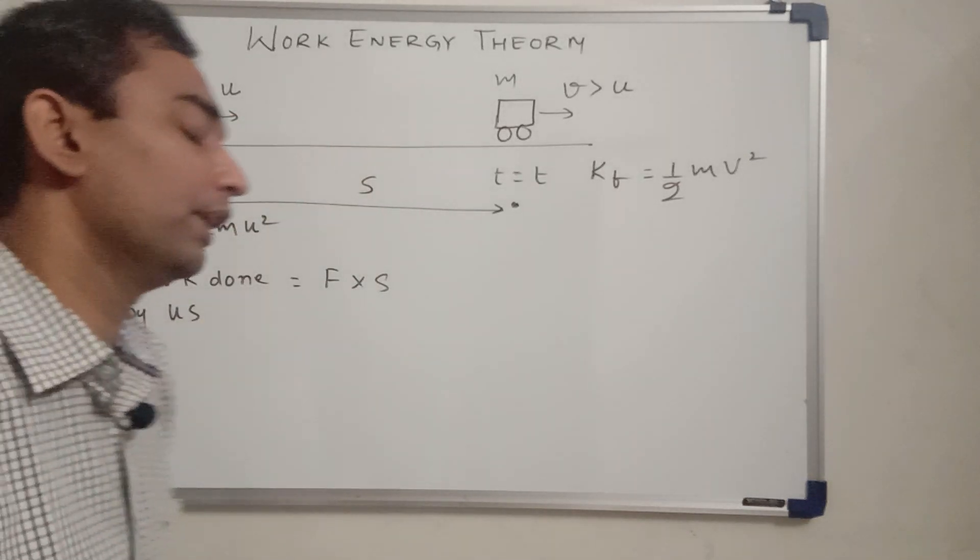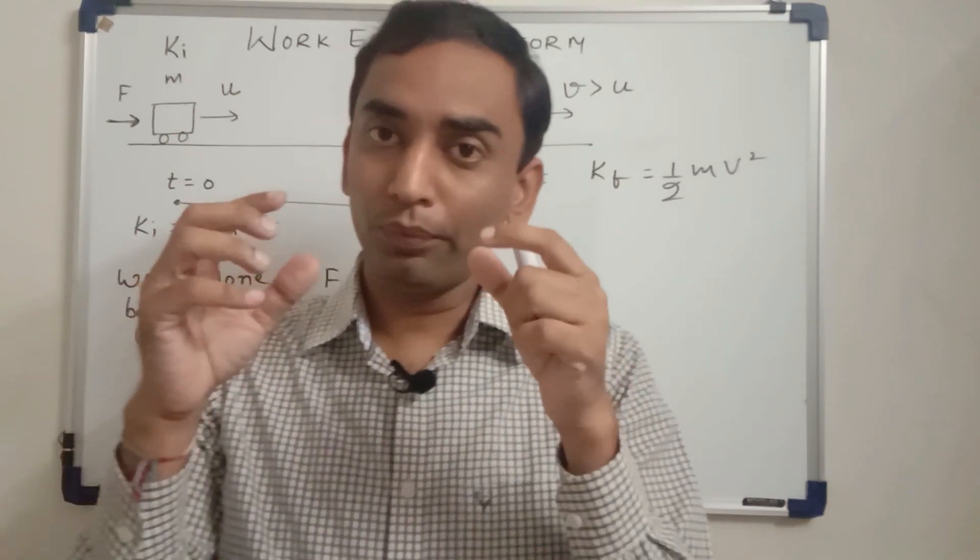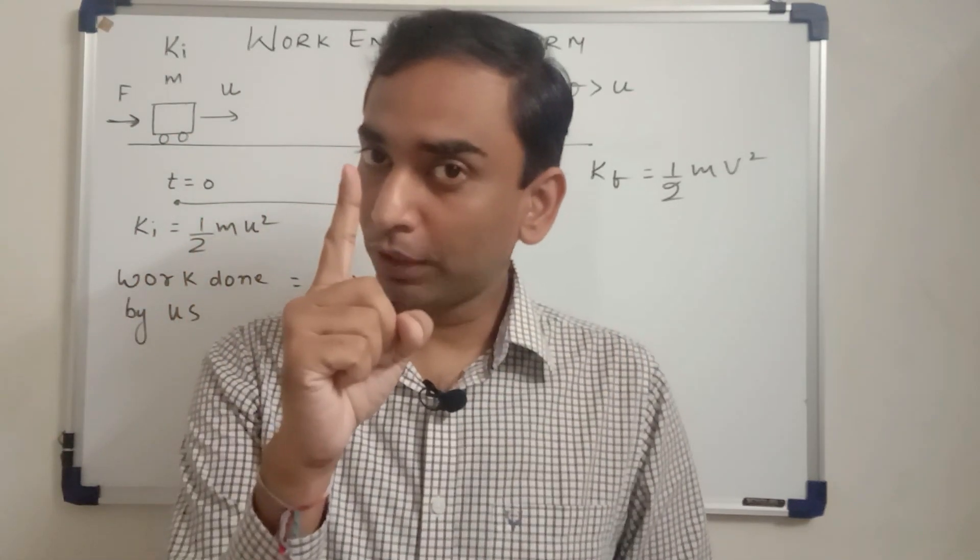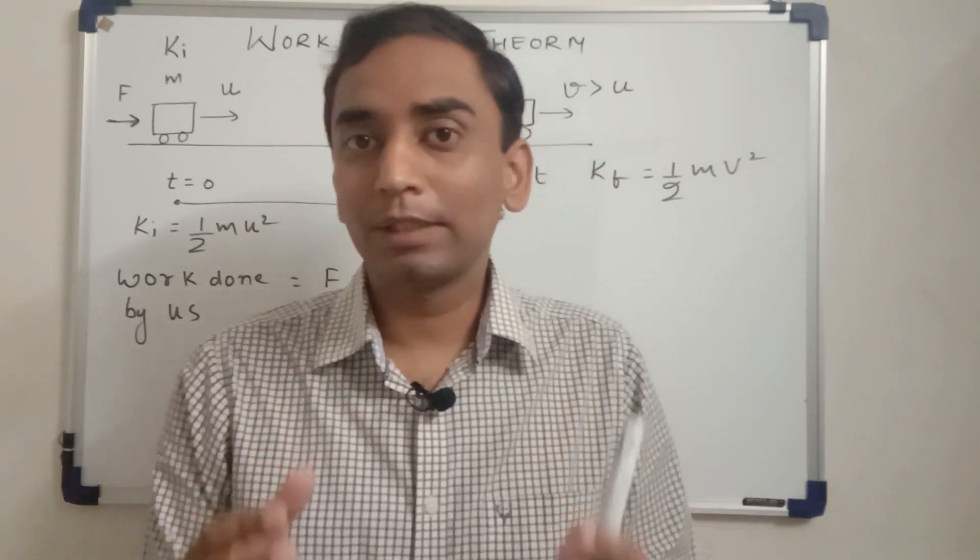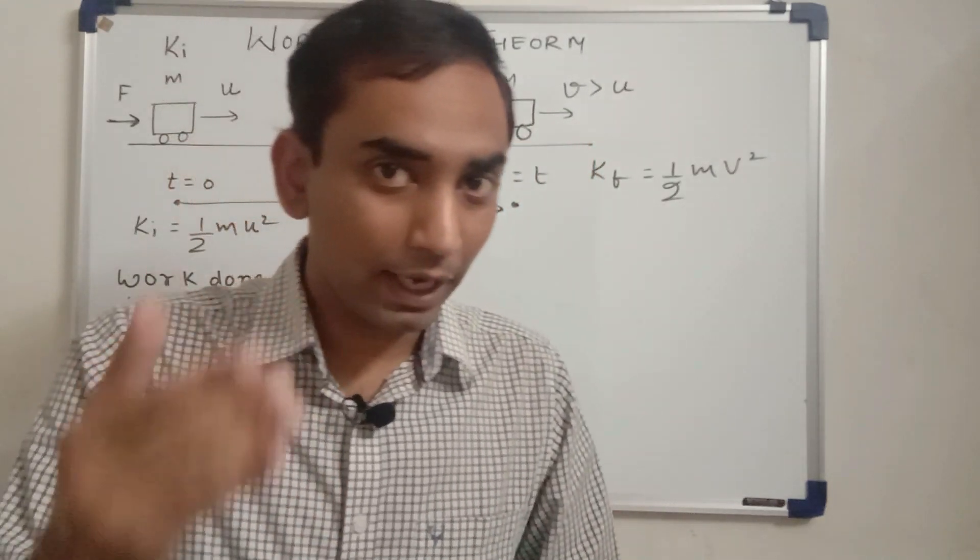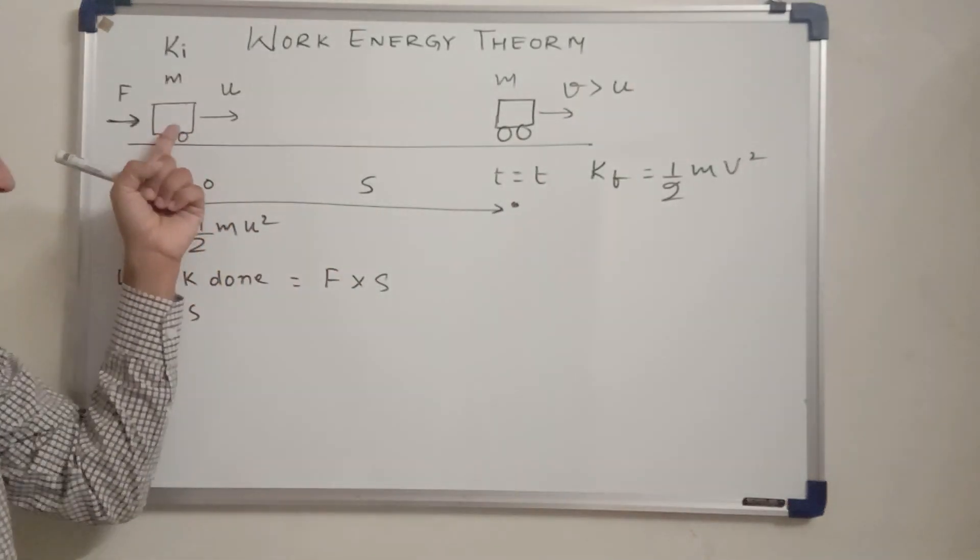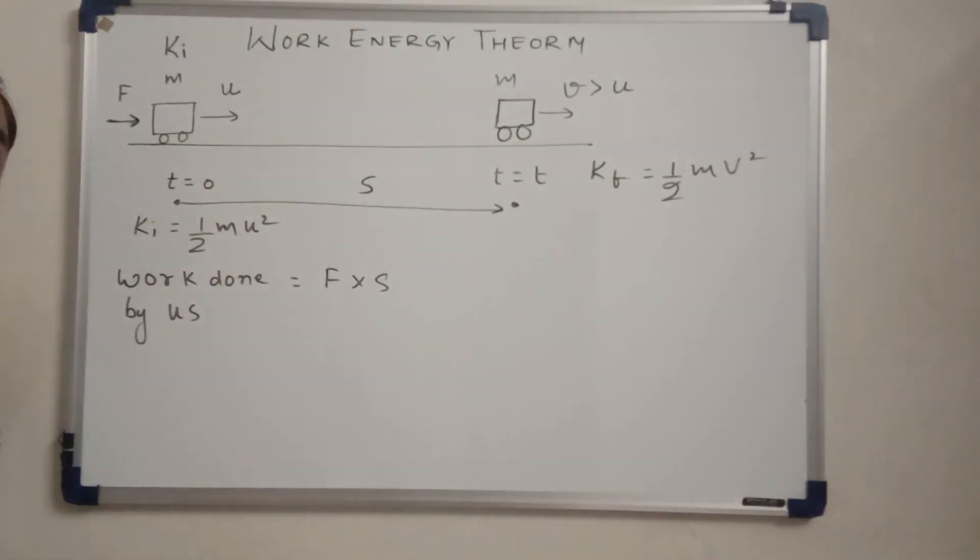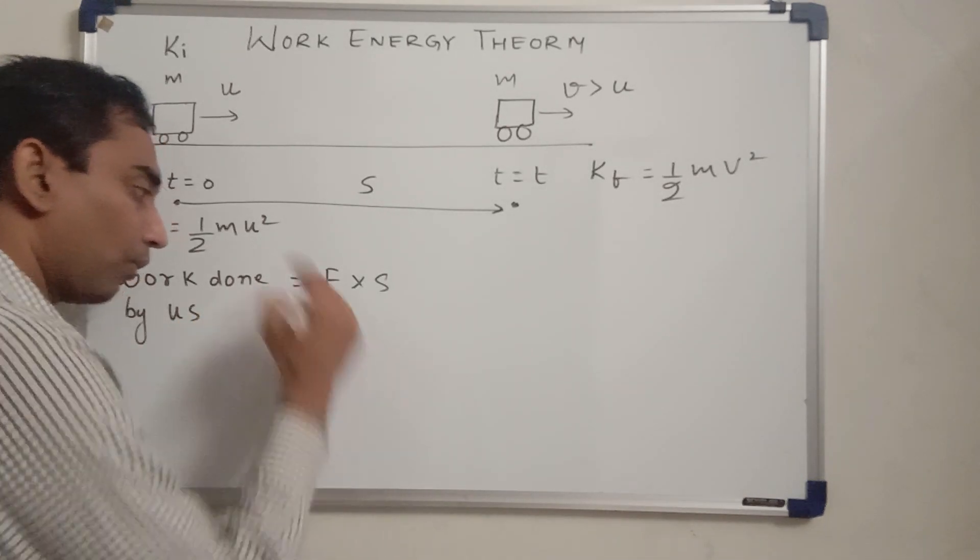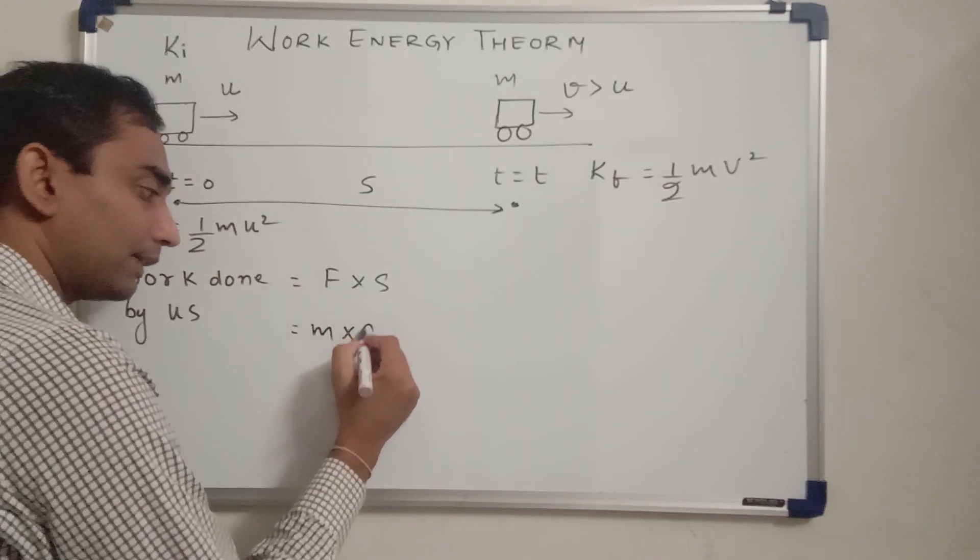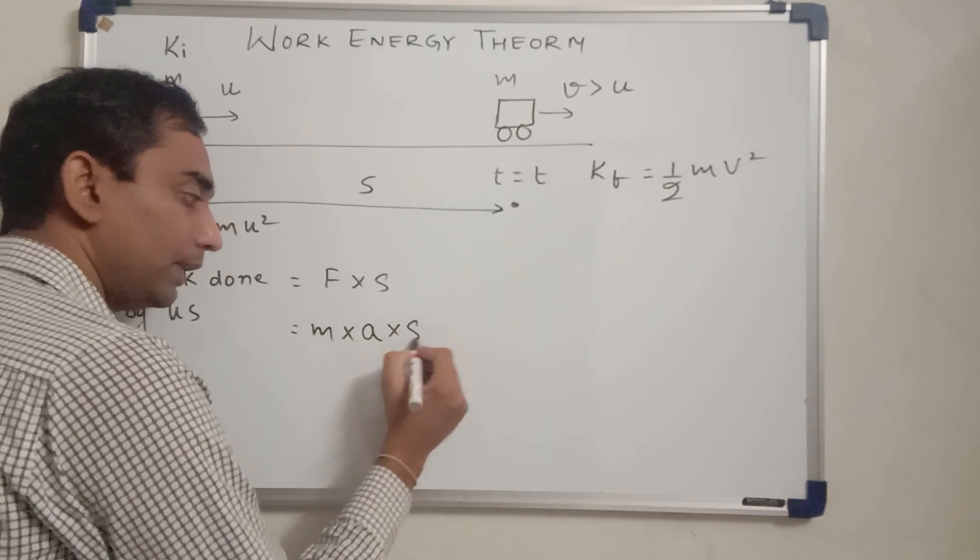Since this is the only one force acting in the horizontal direction, vertical forces have no effect on the horizontal motion, so weight is not to be considered. Since there is only one force acting on the car, that becomes the resultant force. We know that as per Newton's second law, the resultant force F is equal to ma where m is the mass of the body. So this force is equal to mass of the body, that is car, times the acceleration being generated, times the s.